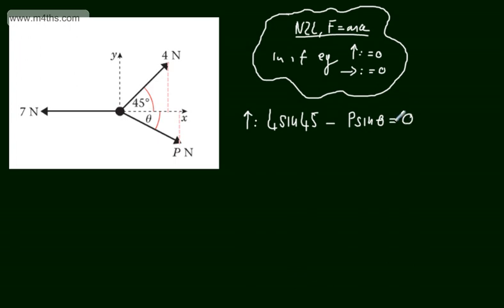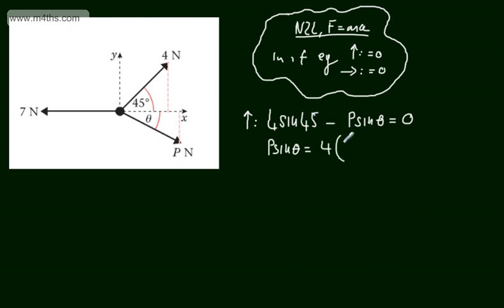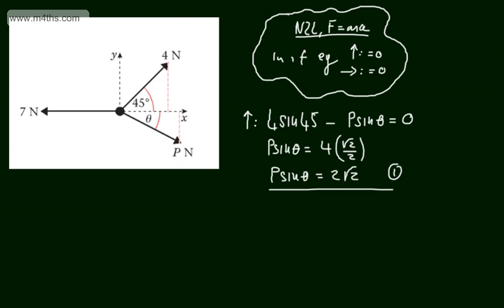And that will be equal to zero. All we've done is use Newton's second law, F is equal to MA — I've resolved taking the upward direction to be positive, so 4 sine 45 minus P sine theta must equal zero as it's in equilibrium. So at this stage we can write that P sine theta equals 4 sine of 45. The sine of 45 degrees is root 2 over 2, so P sine theta equals 2 root 2. I'm going to call this equation 1.